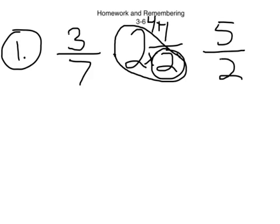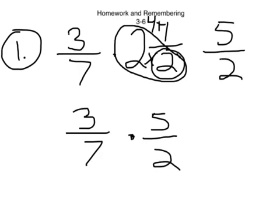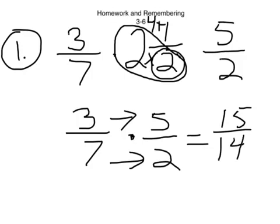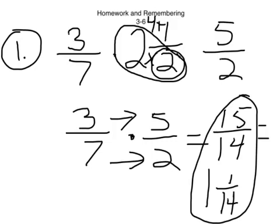Okay, so now we have 3 sevenths multiplied by 5 halves. Now, we can do our cross multiplication going right across. Numerators multiplied denominators. 3 times 5 will give us the 15. And 7 times 2 will give us the 14. You can leave it like that, or you can say it is equal to 1 and 1 fourteenth. So, either one of those answers will be correct for number 1.